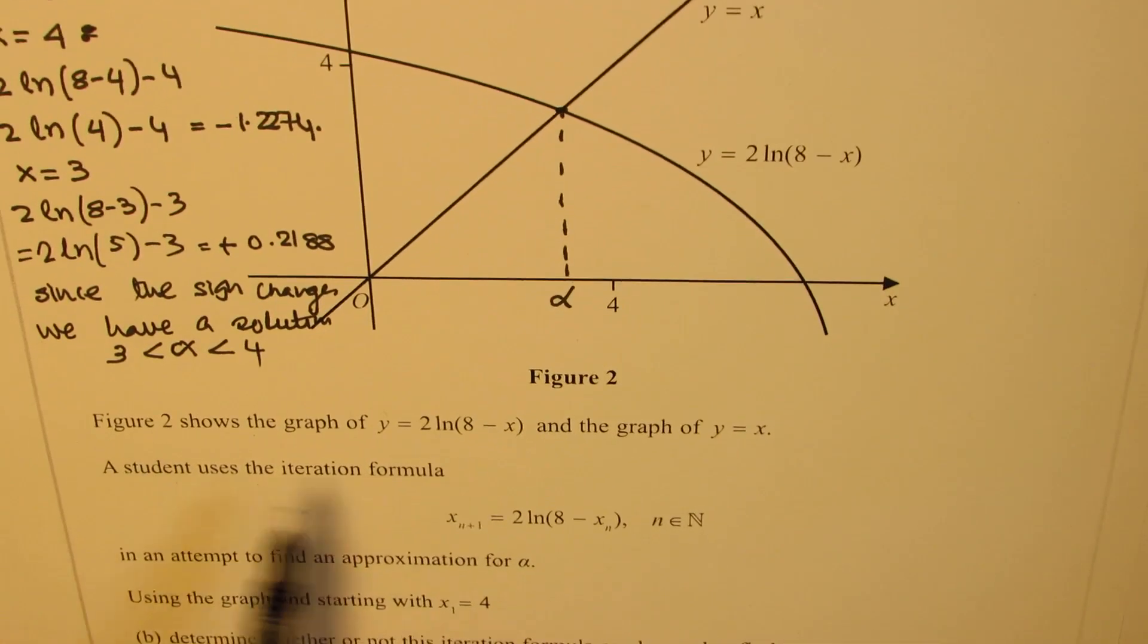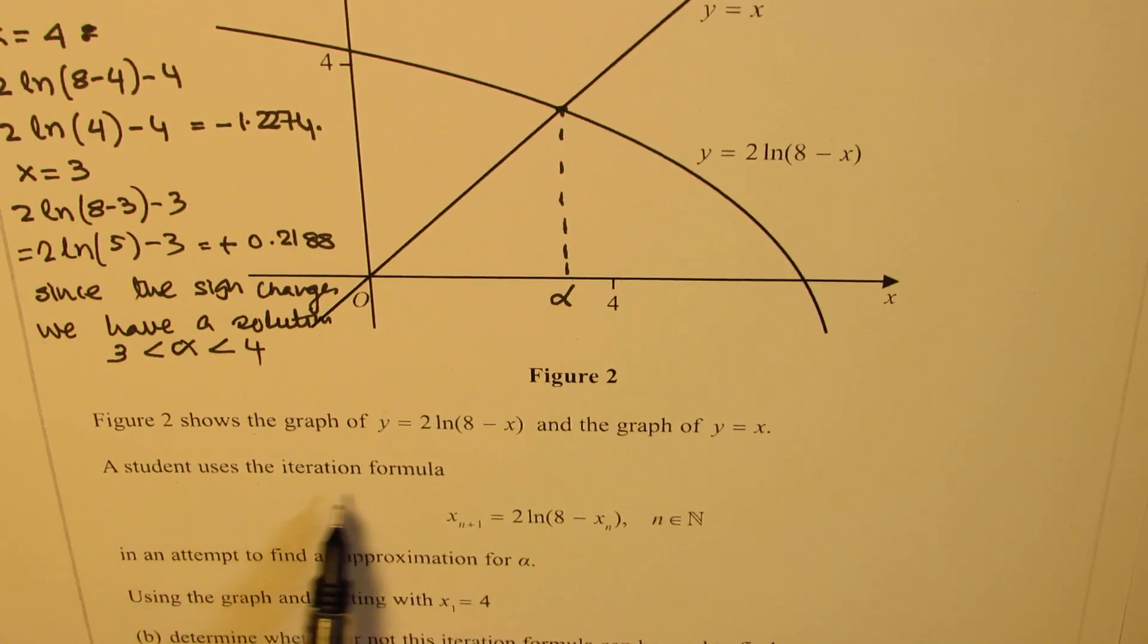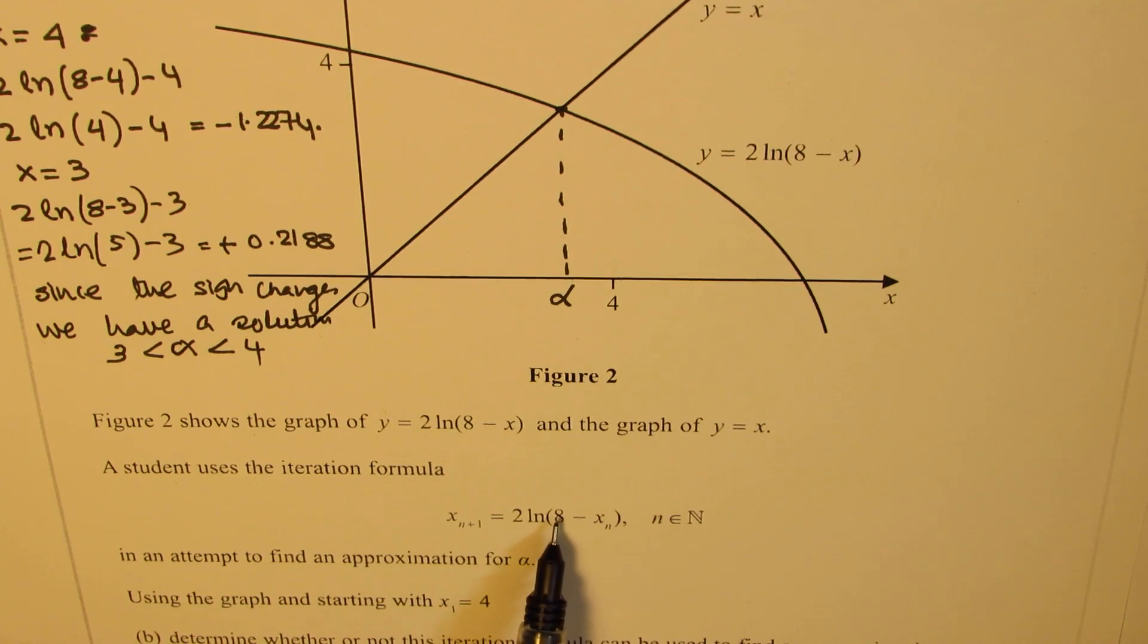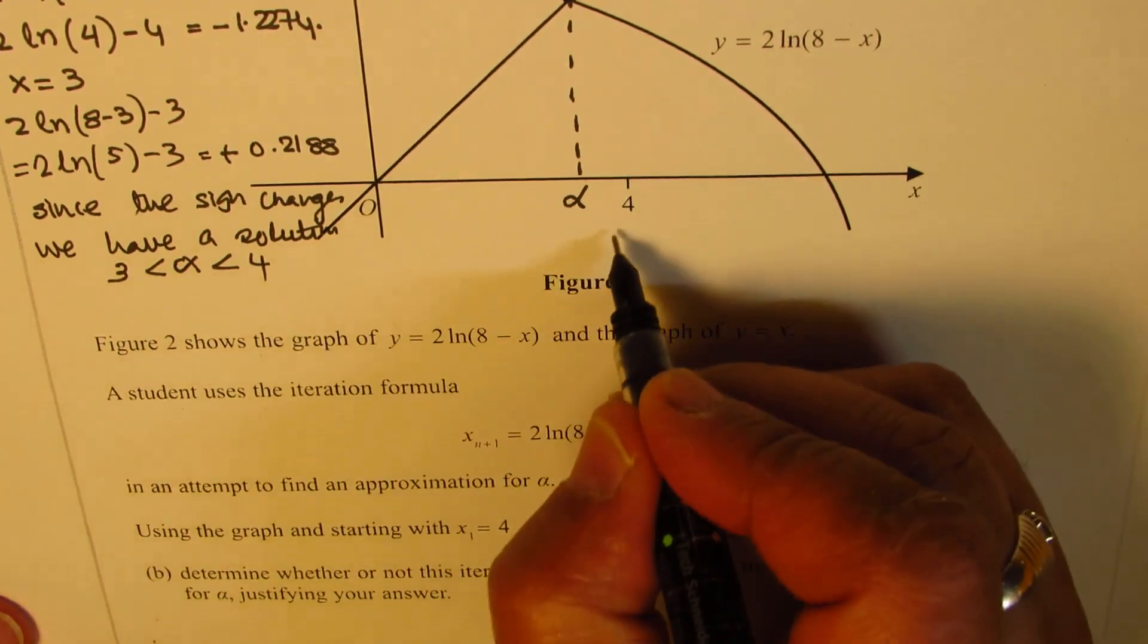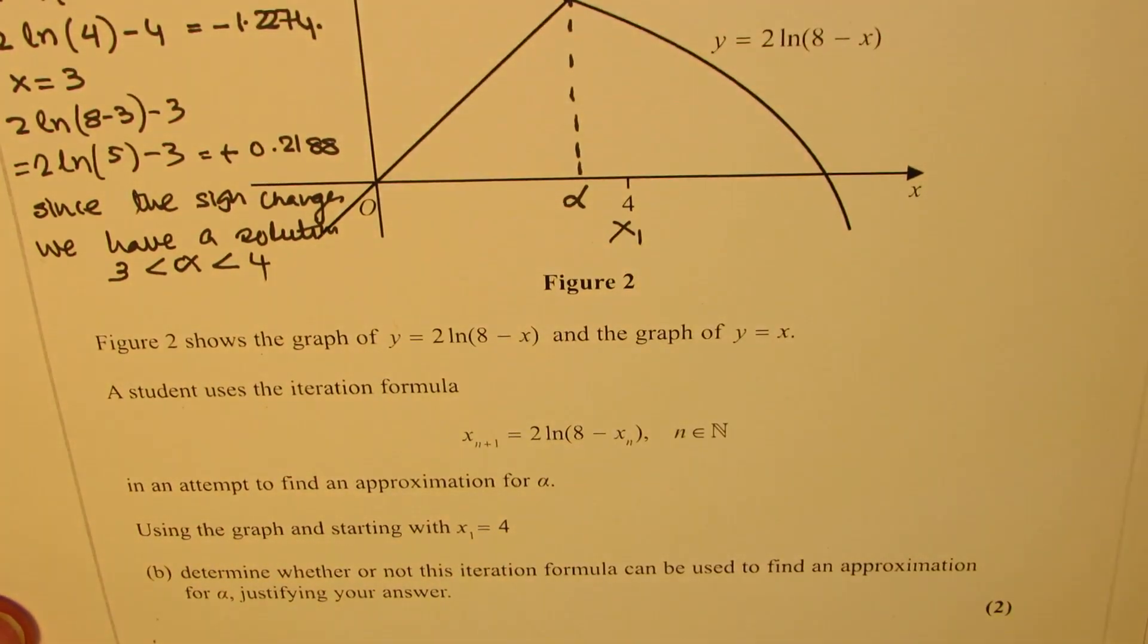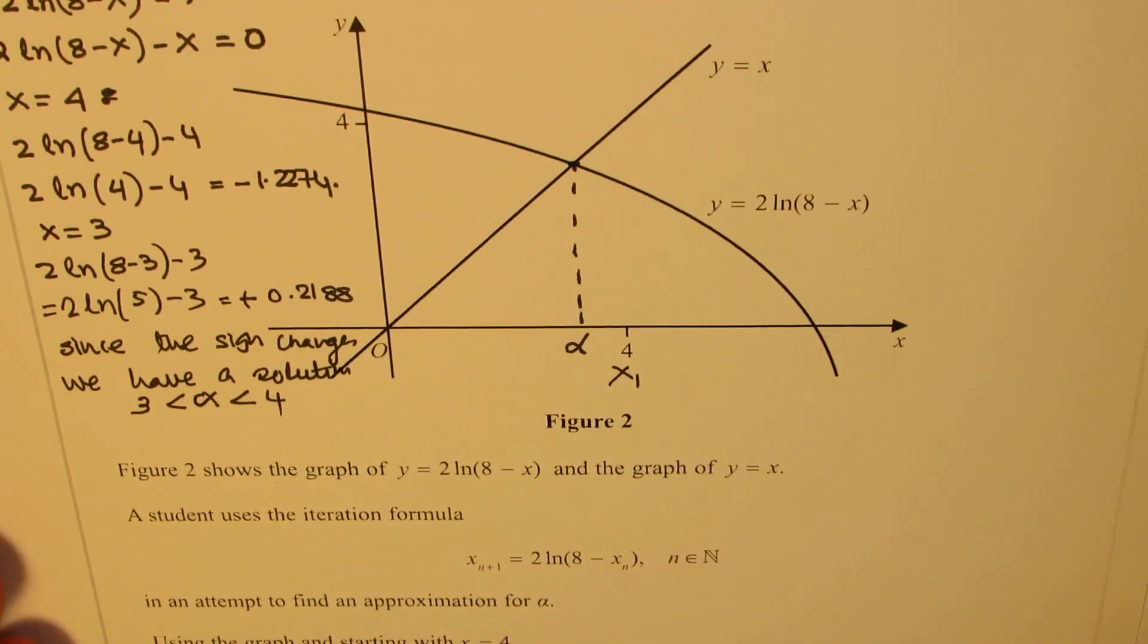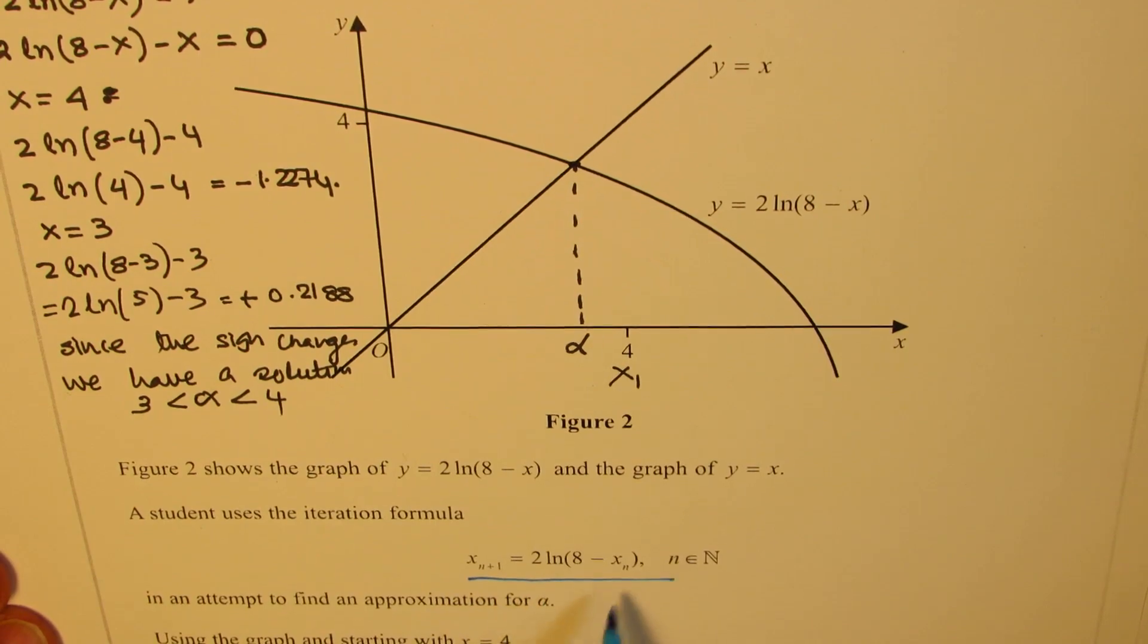Now we need to answer the other question: a student uses the iteration formula x_n+1 equals 2 ln(8 - x_n), n belongs to natural numbers, in an attempt to find the approximation of alpha. Using the graph and starting with x_1 as 4, let's see what happens.